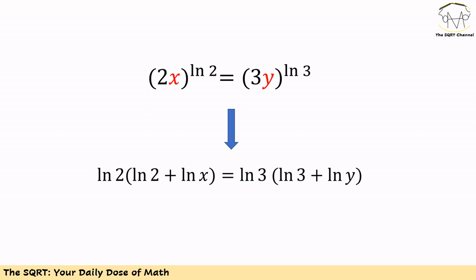We have two equations here. Let's start with the first equation and simplify it by taking ln from both sides. Then we will have ln 2 times ln of 2x equals ln 3 times ln of 3y. We can write ln of 2x as ln 2 plus ln x, and we can also write ln of 3y as ln 3 plus ln y.